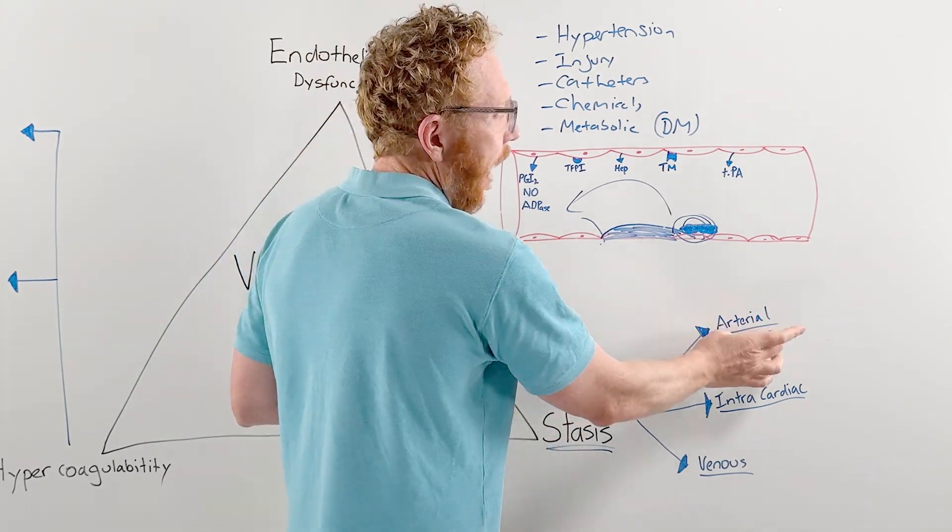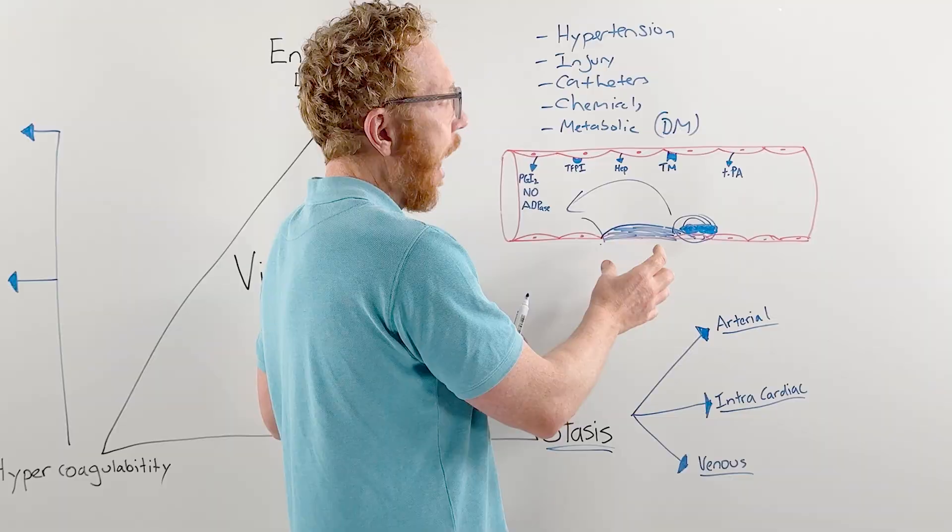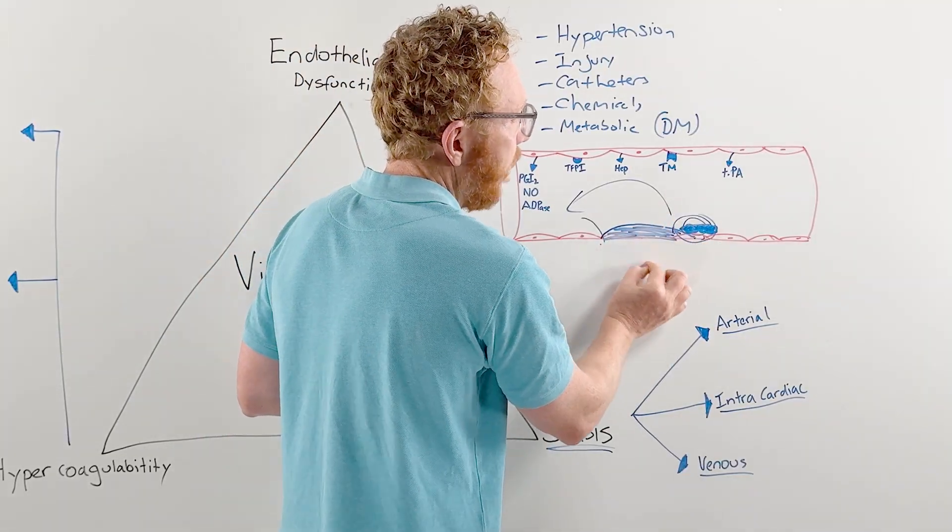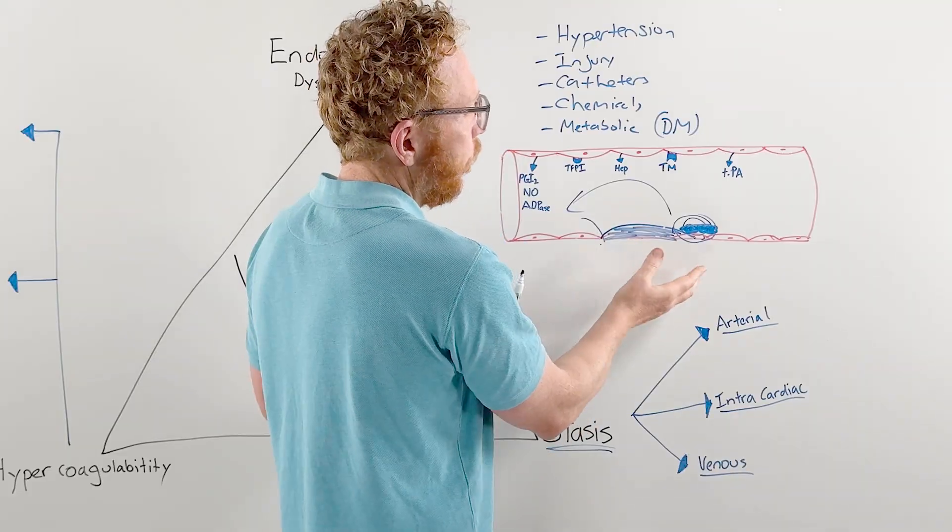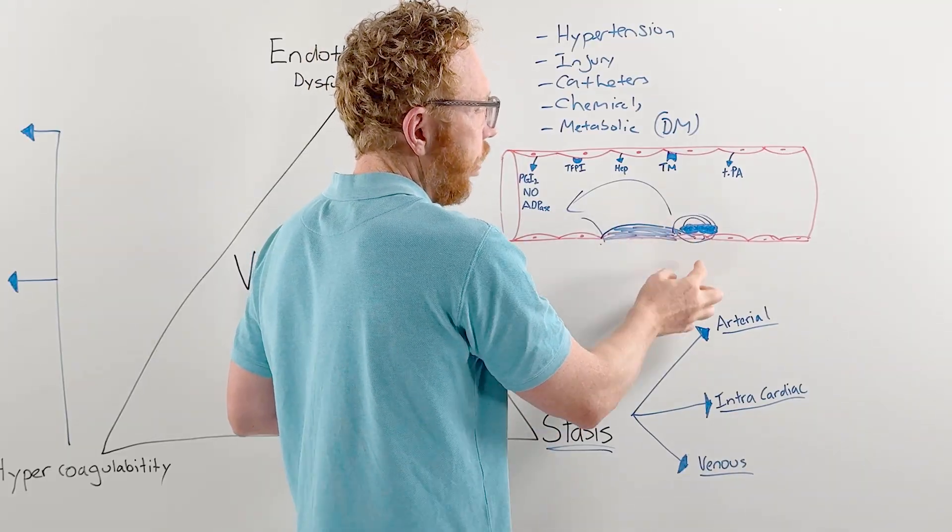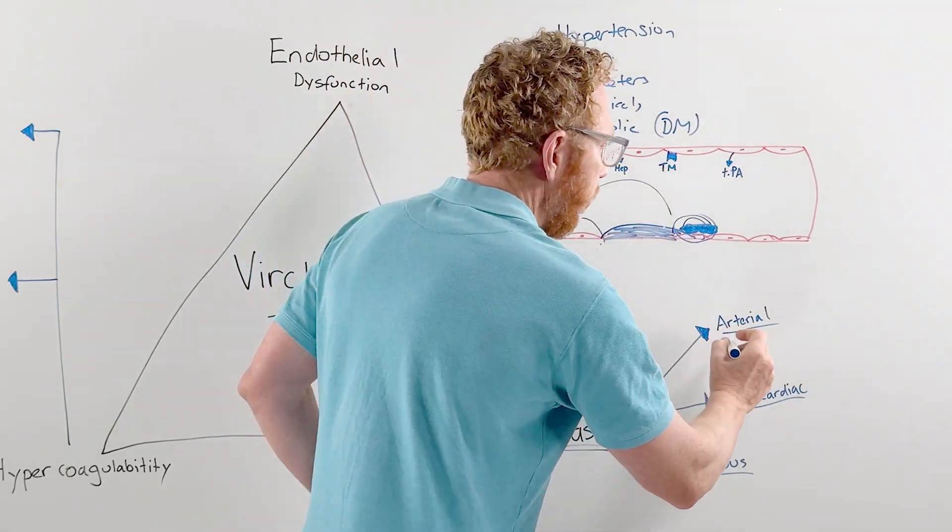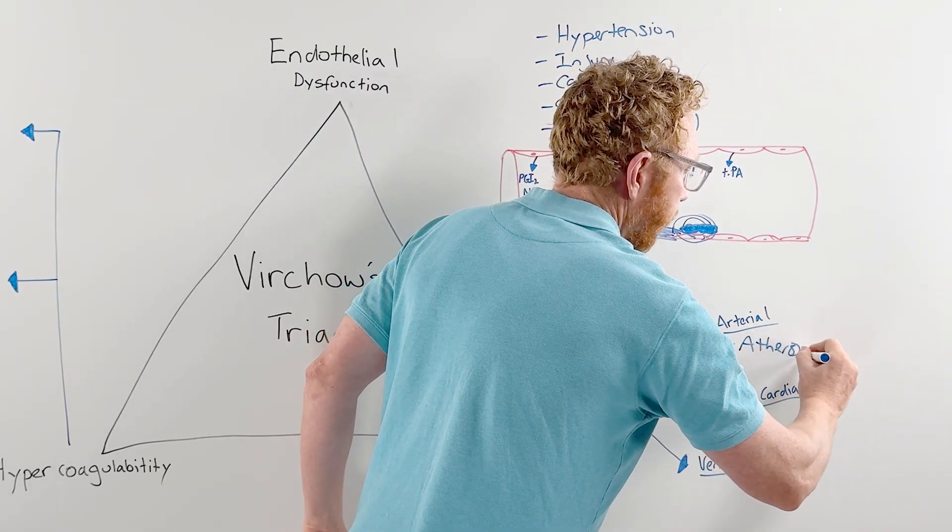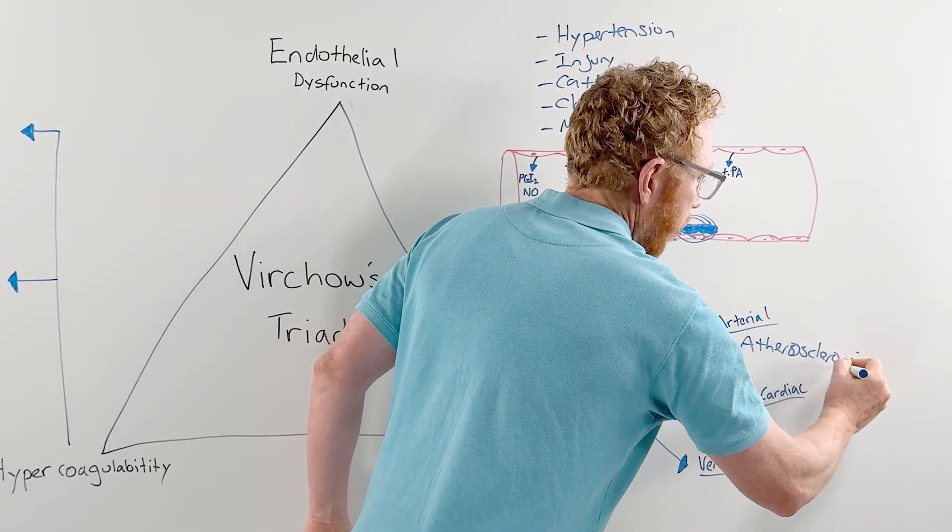Because blood is flowing so fast in an arterial system, the coagulation factors don't play such an important role. A clot is higher proportion platelets. This is why if we want to prevent a blood clot in an arterial system, we usually use antiplatelet medication. Artery stasis happens in conditions with plaques or aneurysms where we have pouching in the blood vessel wall and stagnation occurs—atherosclerosis or aneurysms.